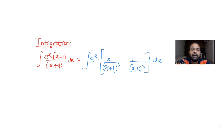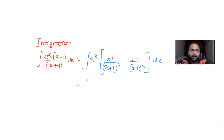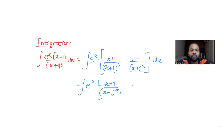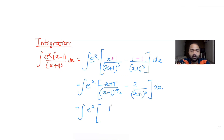What I can do here is make my numerator for the first expression the same as the denominator. The denominator is (x plus 1) the whole cube, so if I want to write it in the form of (x plus 1), I will add 1 and subtract 1. I am now left with the integral of e raised to x — this becomes (x plus 1) upon (x plus 1) the whole cube, so I can cancel one term, leaving 1 upon (x plus 1) squared, minus 2 upon (x plus 1) the whole cube, dx.